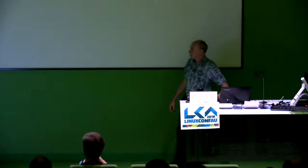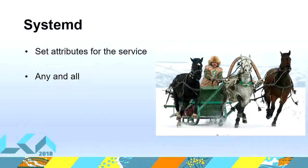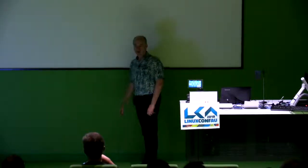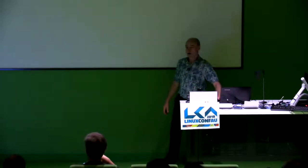Now we've got systems running with things like systemd, where you can set any attribute on the service you're going to run — give it these capabilities or run it with this SELinux context — so since you've constrained what it can do, it'll be safe. Then we brought up containers — the ultimate fuzzy blanket. We lie about the environment: you run your system in a container, it's not really running with privilege, it's not really running on the system. If it screws up, it just screws up in the container. You can't get out of a container, right? So here we are sitting on the porch in our old armor with our laser rifle.